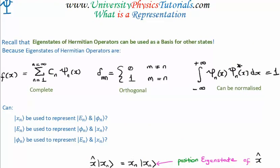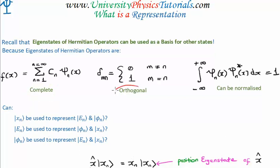I'd like you to recall that eigenstates of Hermitian operators can be used as a basis for other states. This is because the eigenstates of Hermitian operators, by definition, are complete. They are orthogonal in a mathematical sense, and they can be normalized.